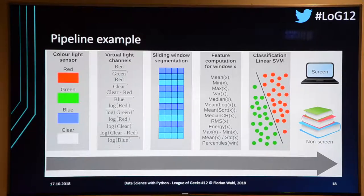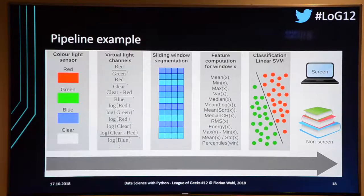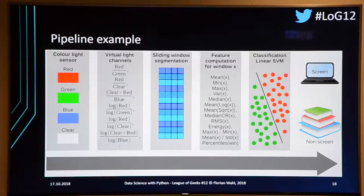With 725 features, it's hard to pick the important ones for your classifier. Every feature adds one dimension — humans can visualize up to three dimensions. The problem is that classifiers often measure distances between points, and the Euclidean distance in 725-dimensional space becomes meaningless. The final step was classification using a linear support vector machine to determine whether the person wearing the glasses is sitting in front of a computer screen or not.